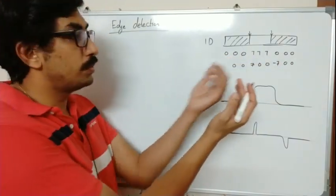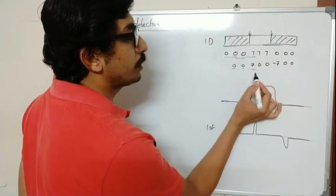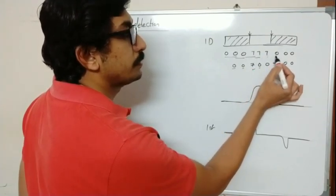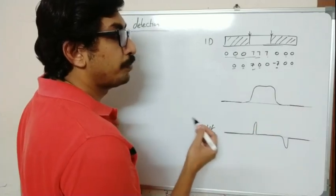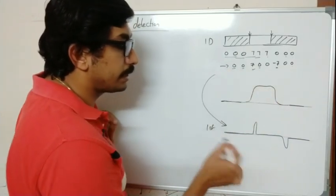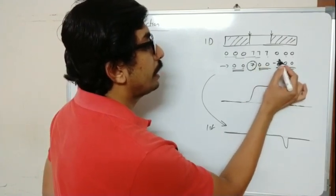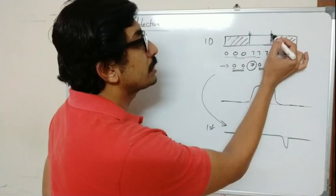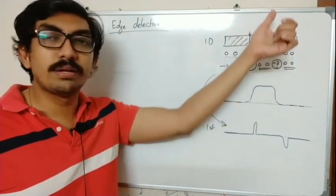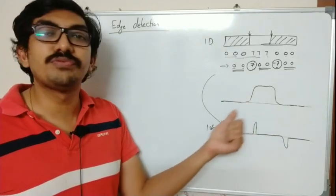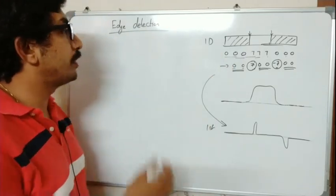For the discrete case: 0−0=0, 0−0=0, 7−0=7, 7−7=0, 0−7=−7, 0−0=0, 0−0=0. If we plot this graph we get exactly the same shape as the continuous derivative — zero values with a +7 and a −7 at exactly the positions where the edges are. By getting the change in intensity values we find the edges. Change in intensity is the first derivative, and that is how we use derivatives to find edges in an image.